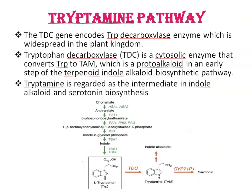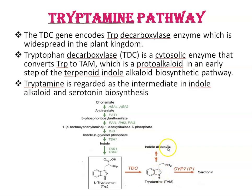Next is the tryptamine (TAM) pathway. The TDC gene encodes tryptophan decarboxylase, a cytosolic enzyme that converts tryptophan to TAM (tryptamine), which is widespread in the plant kingdom. Tryptamine is a protoalkaloid and an early intermediate in the terpenoid indole-alkaloid biosynthetic pathway, and is regarded as an intermediate in indole-alkaloid formation and serotonin biosynthesis.